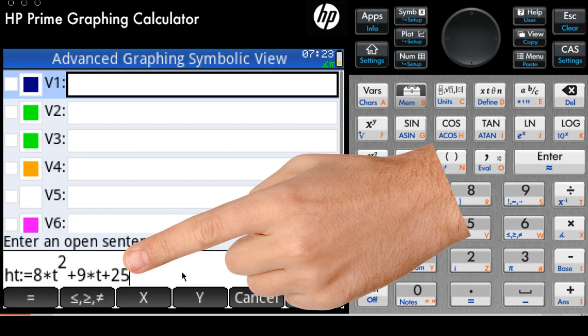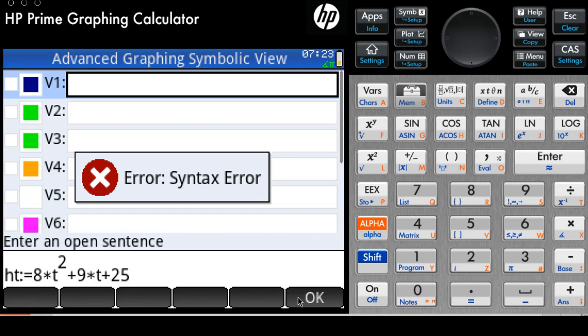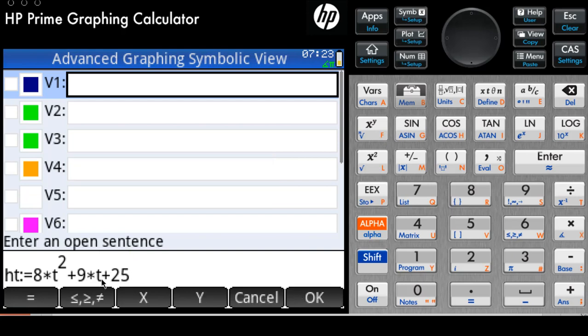But before I enter that, I have to change t for X and ht for Y. What if I forget that? It will just give me a syntax error. I go back and I change this t for X. The X is down there, so you don't have to look for it. Shift X and let me change that. Change ht for an uppercase Y. That is the format the calculator expects. I type OK.